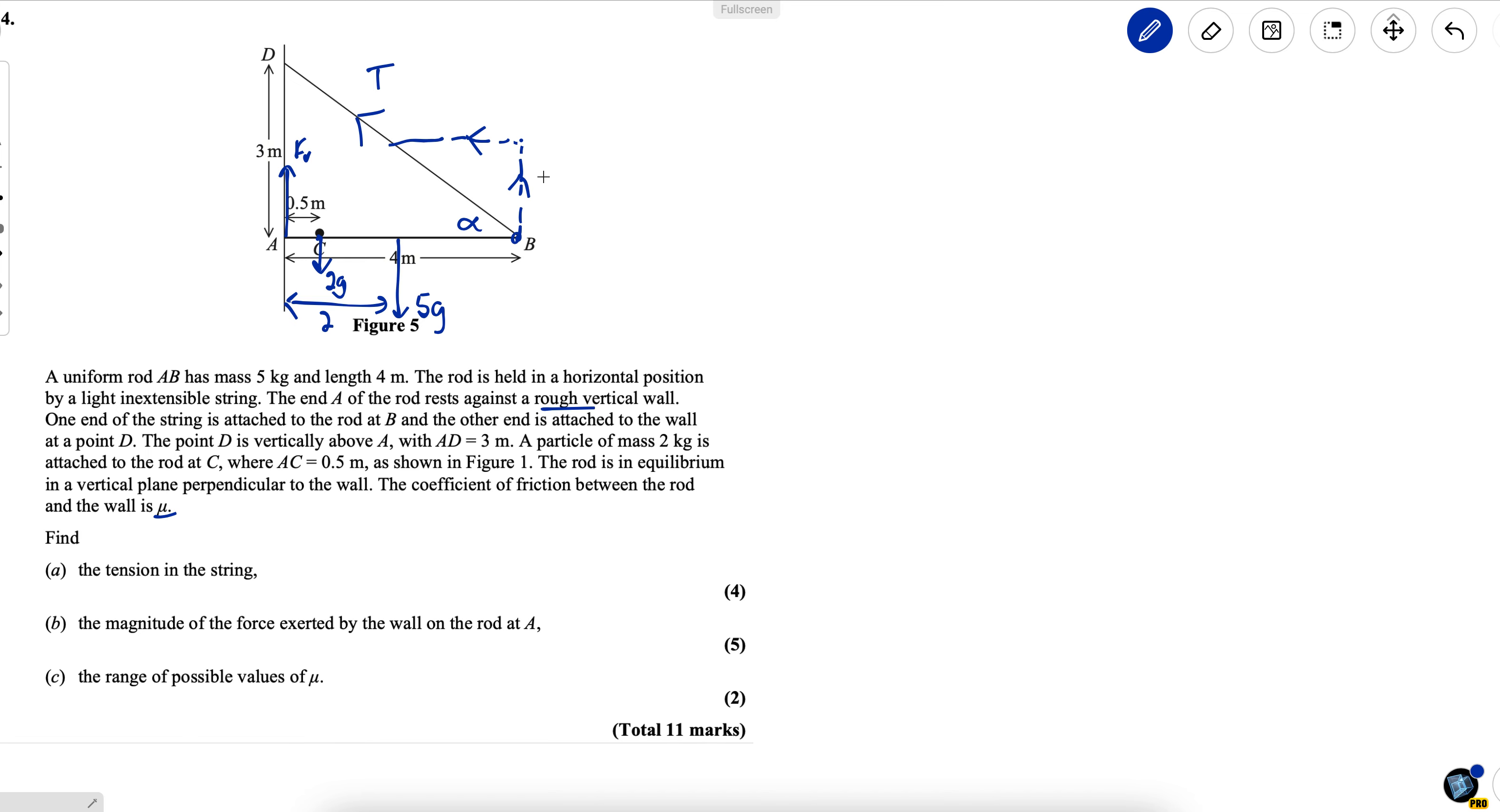I won't need the actual value of alpha because this component here is T sin alpha and this component here is T cos alpha. So those are the values that I need to find sin alpha and cos alpha. Sin alpha is 3 over 5 and cos alpha is 4 over 5.